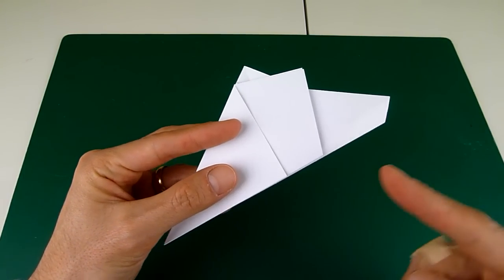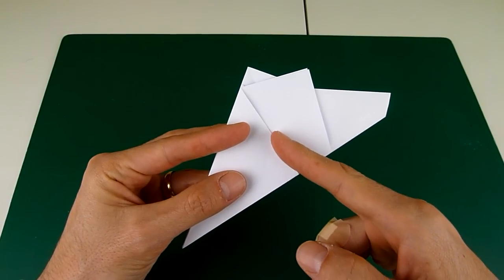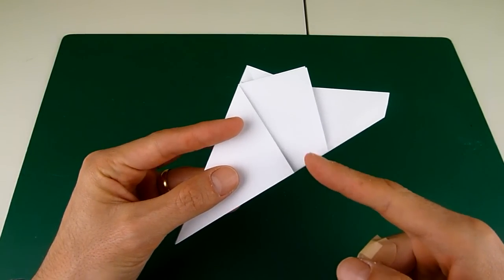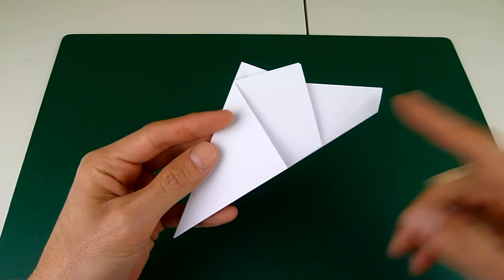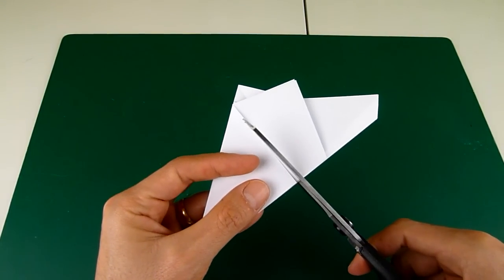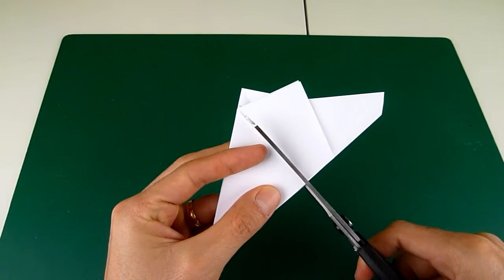So your paper should look something like this. And now what we're going to do is take the scissors and just cut along this edge here, right along the edge of that paper. So I'm going to take the scissors and cut.